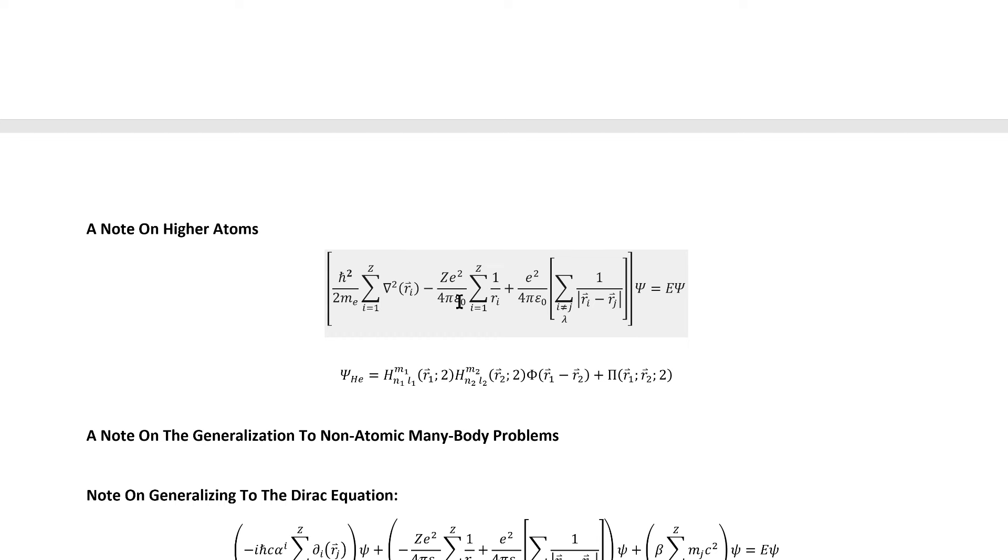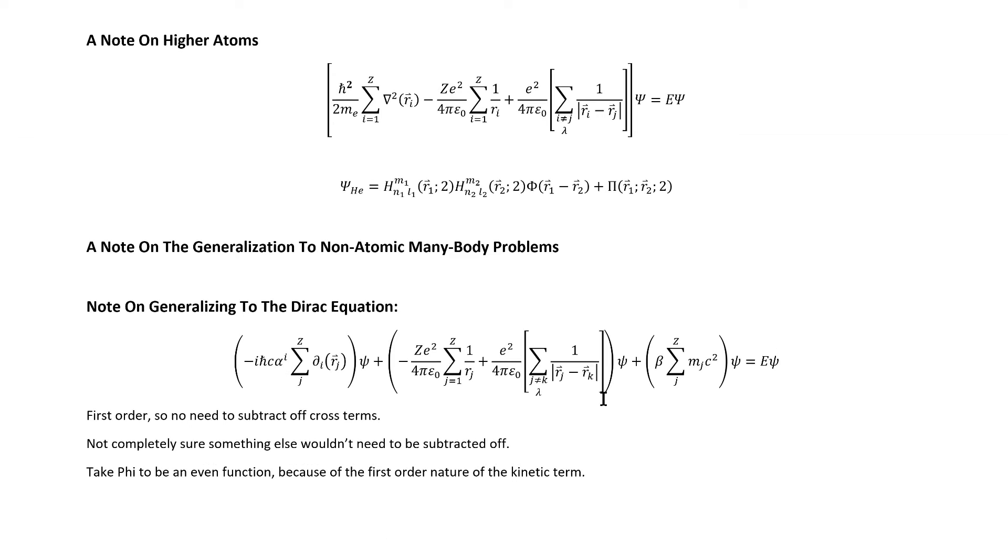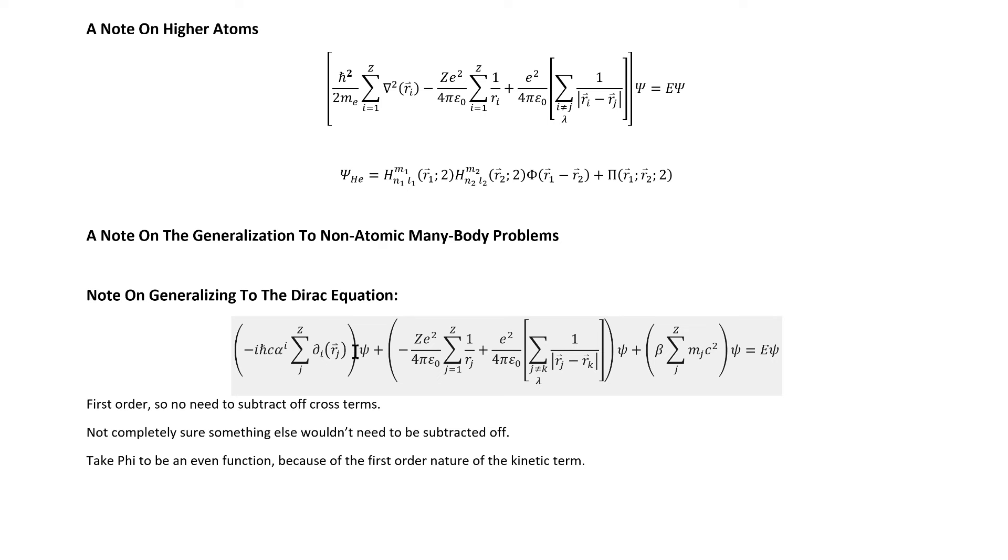As it happens, in principle you wouldn't even need to have one of the charges be fixed. You would then just only have phi terms. For the lithium case, we'd have three hydrogen atom factors and then three choose two or three phi factors. And then for beryllium we'd have four hydrogen atom factors and then four choose two phi factors. Now if we want to generalize to the Dirac equation, we have to account for the fact that it's first order. So we wouldn't need to subtract off the product rule cross terms. I'm not completely sure if there isn't something else you might want to subtract off, but I can't think of anything from a superficial consideration, and I'm not really going to look at it in detail unless there's some movement on the Schrödinger version of the problem. It is the case that if you want the kinetic term not to cancel when it applies to the phi factor, you'd probably have to take the phi factor to be specifically an even function of the difference coordinates.